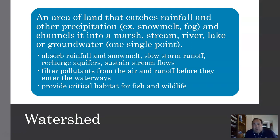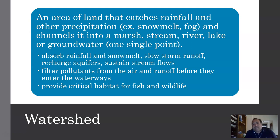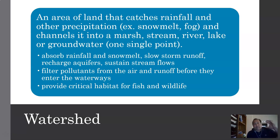Clean water is another example, and it's a good time to talk about a watershed. We'll have a section specific to watershed management later in the semester. A watershed is an area of land that catches rainfall and other precipitation, like snowmelt or fog, and channels it into a marsh, stream, river, lake, or groundwater — channels it to one single point. Some of that water is going to go into the ground and become part of the aquifer, which is where groundwater is stored.